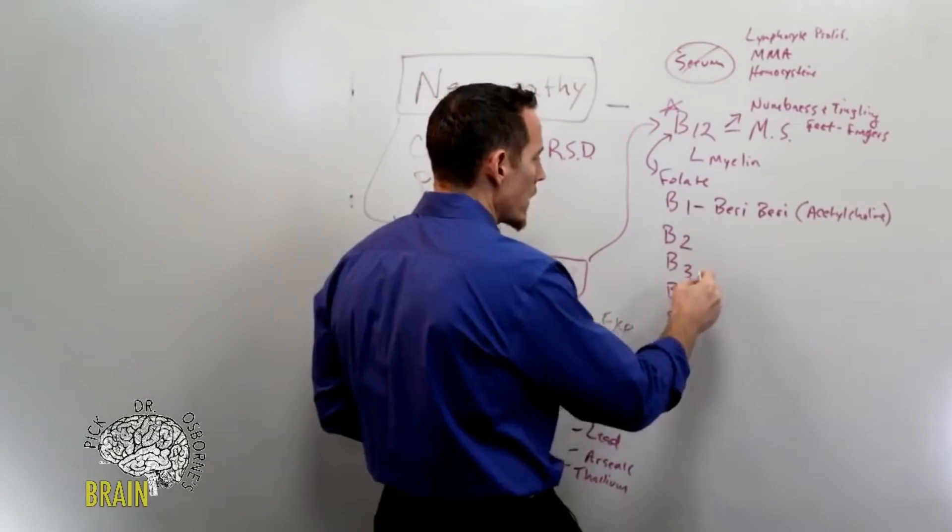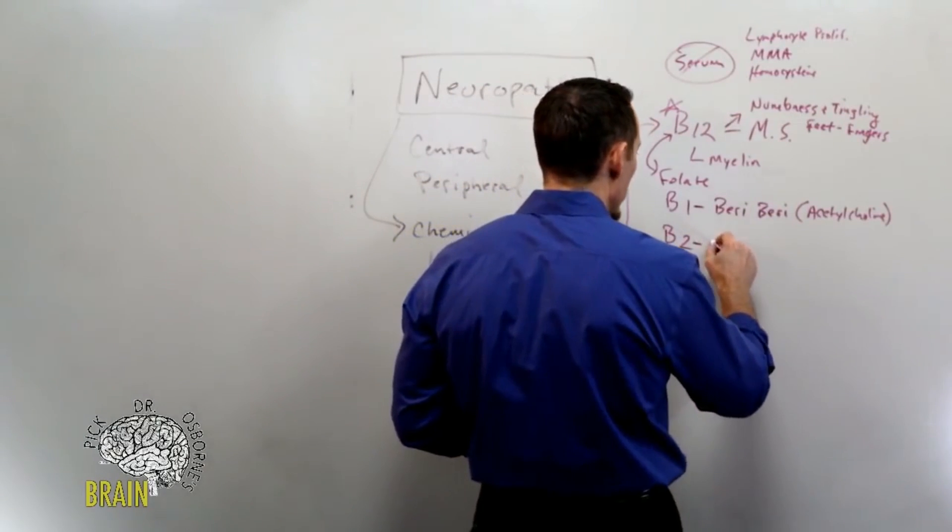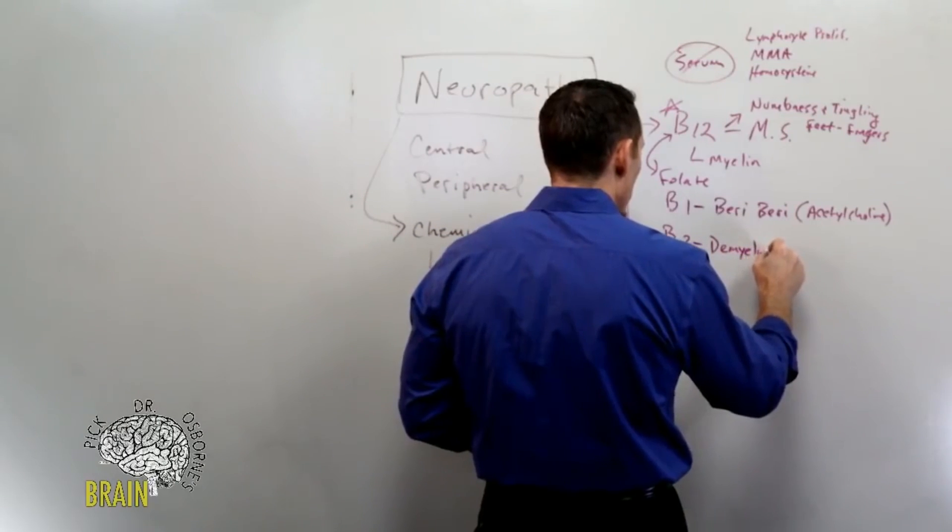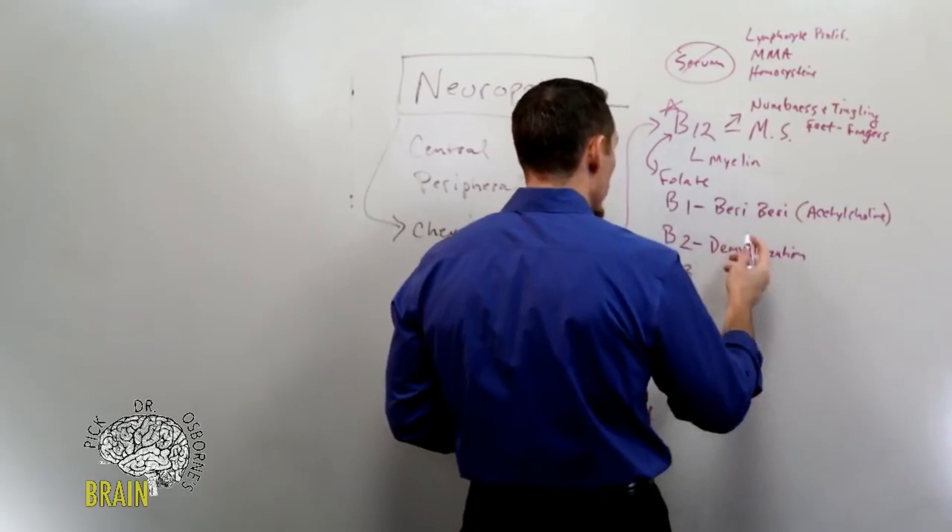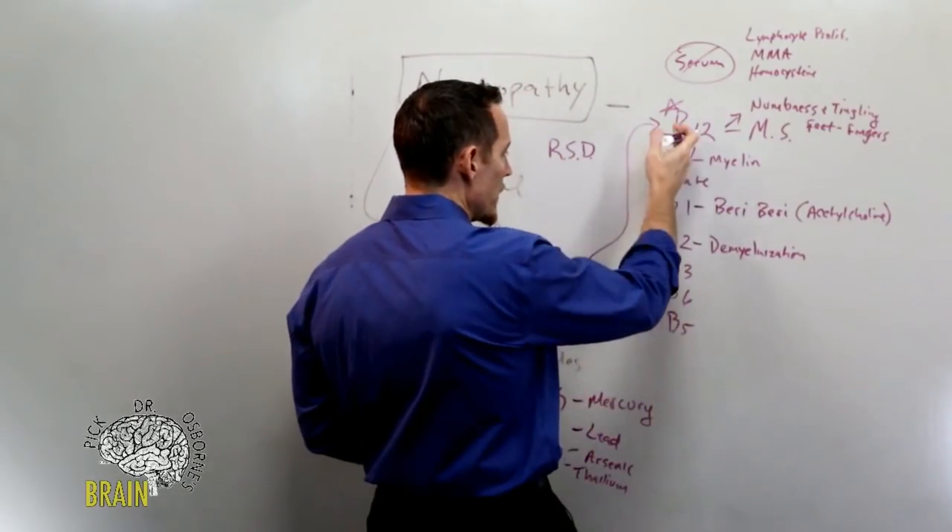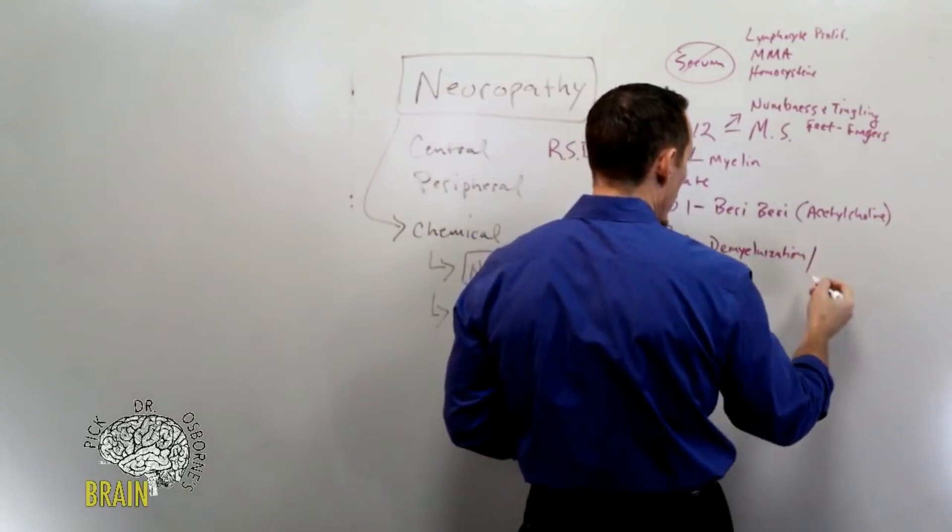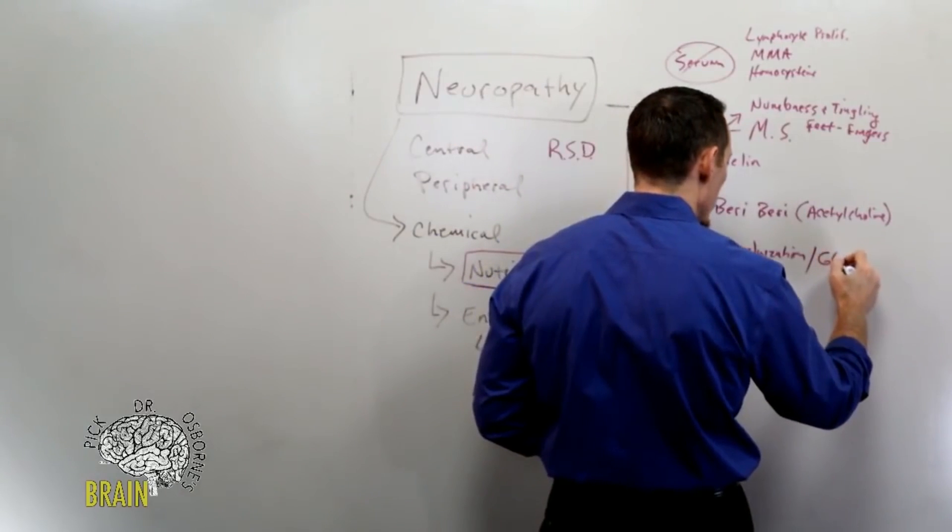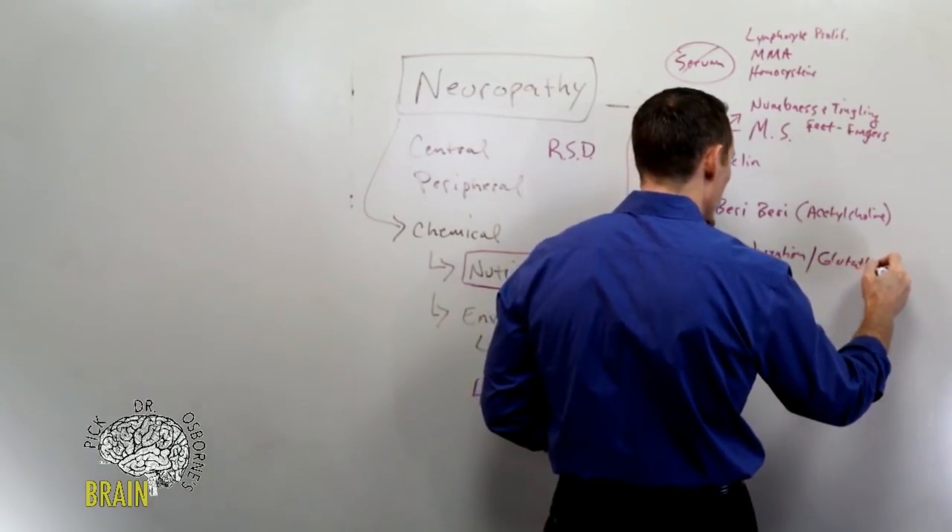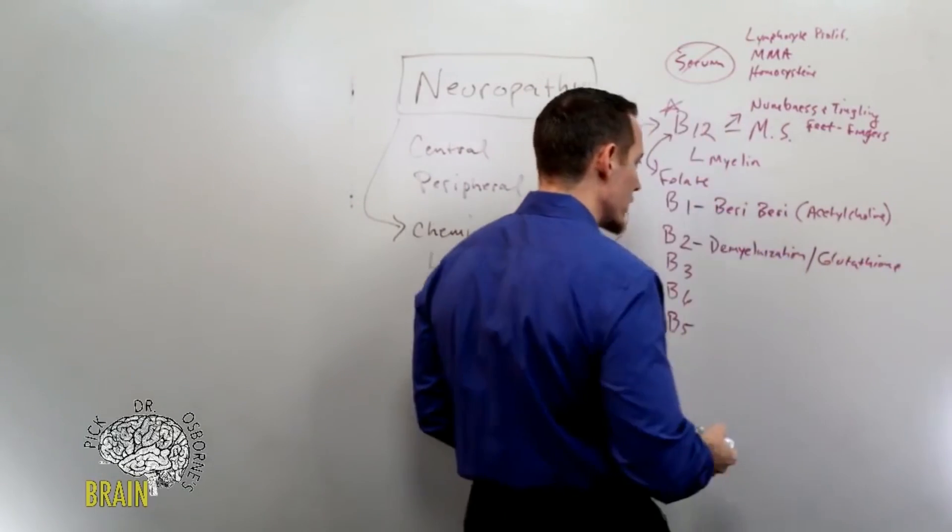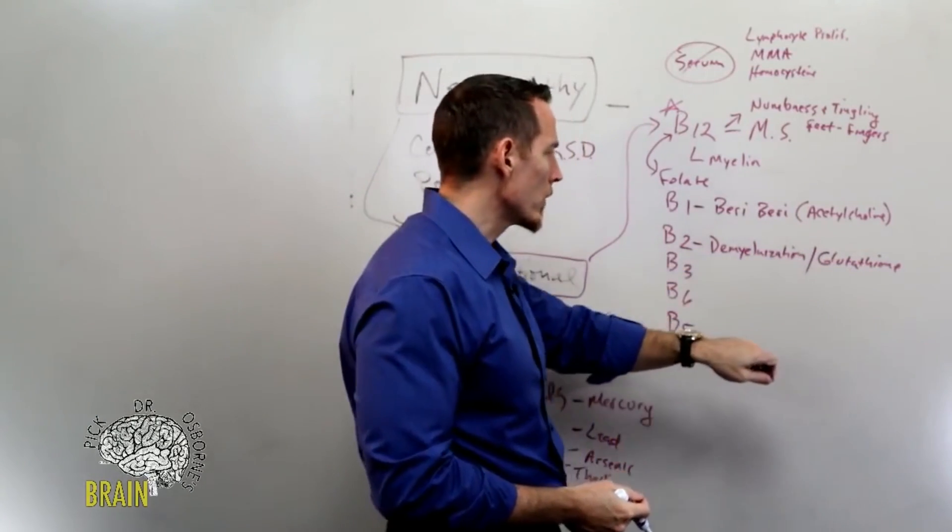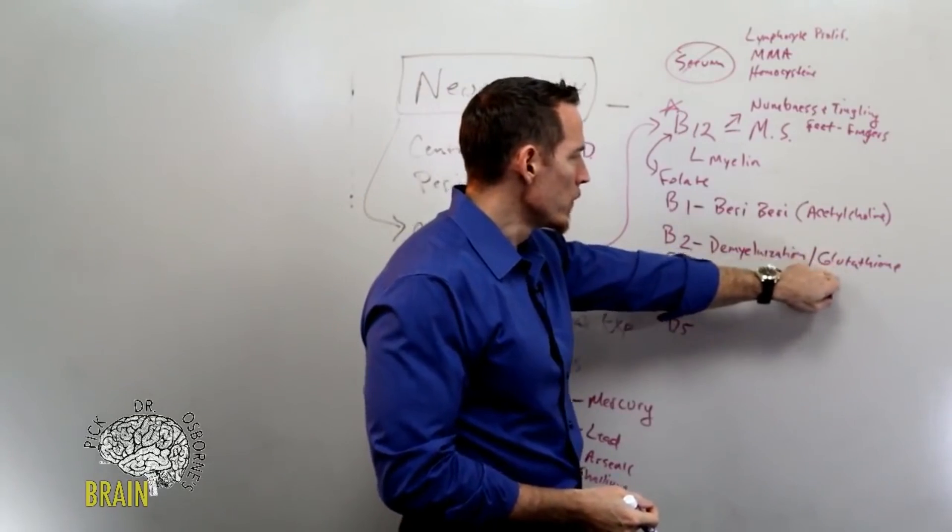You've also got vitamin B2 deficiency, and this can cause demyelinization as well, demyelinization of the nervous system just like vitamin B12. But there's also another type of suspicion behind vitamin B2, and that you need vitamin B2 to produce glutathione. Glutathione is one of the most powerful antioxidants in the body, and as an antioxidant it helps to protect and preserve nerve tissue. So two different ways potentially that vitamin B2 deficiency could cause it.